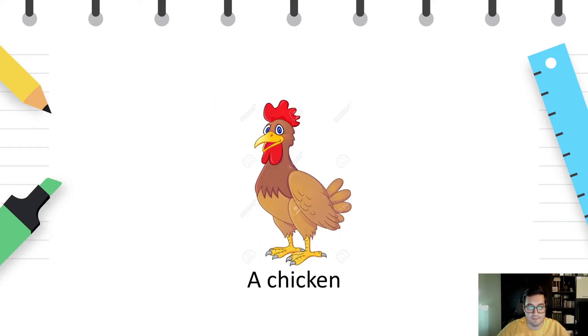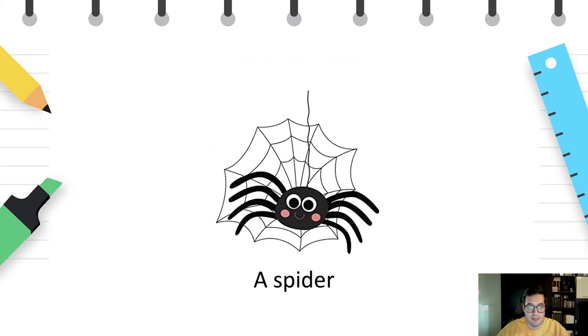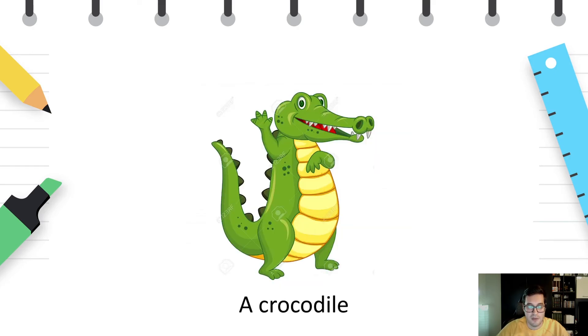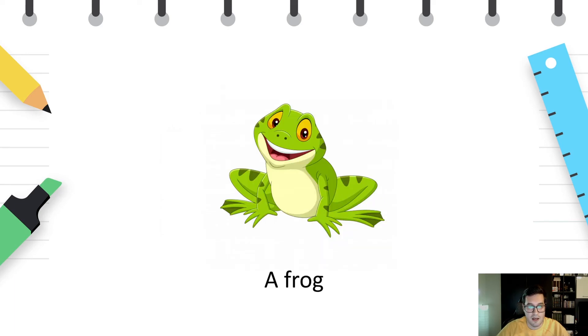A chicken. A snake. A spider. A tiger. A crocodile. An elephant. A frog.